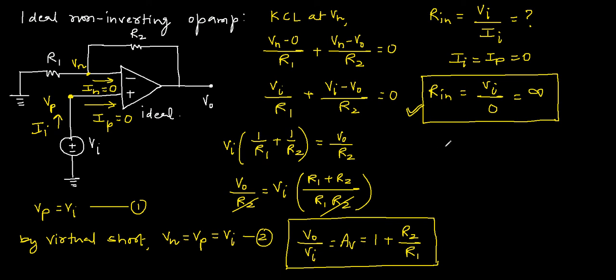Now we will find the output resistance R0. The output resistance for this non-inverting op-amp is zero, and its derivation is the same as the derivation of output resistance in the case of the inverting op-amp. So I am not redoing it here, as we already covered it in the previous lecture on the ideal inverting op-amp.